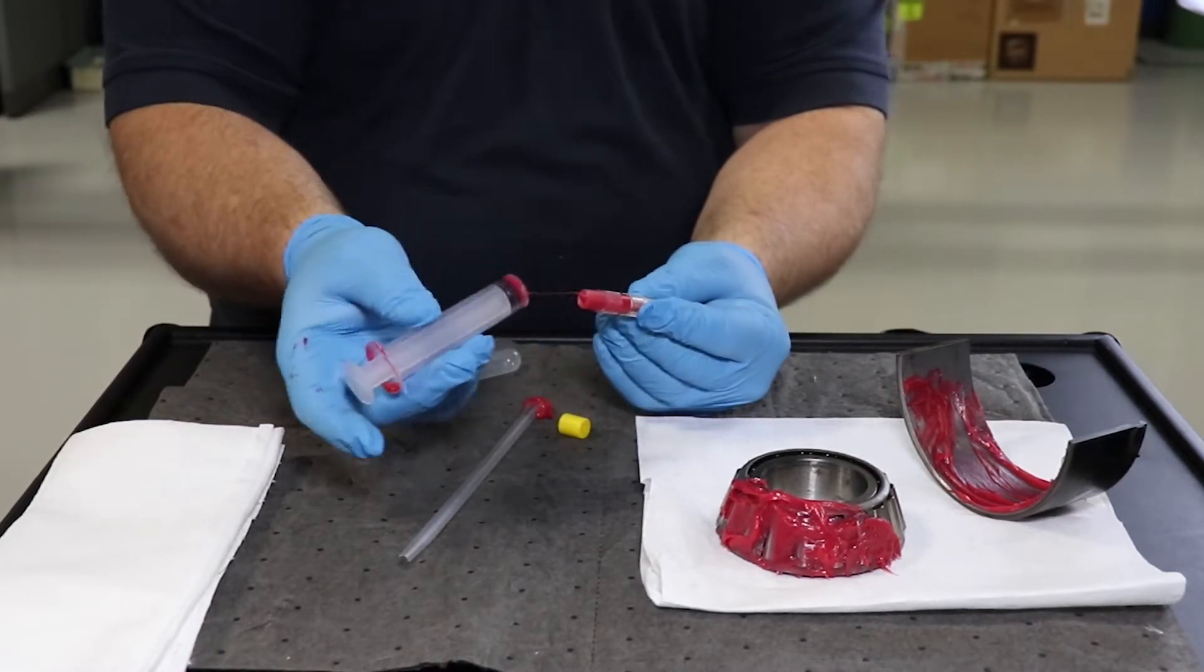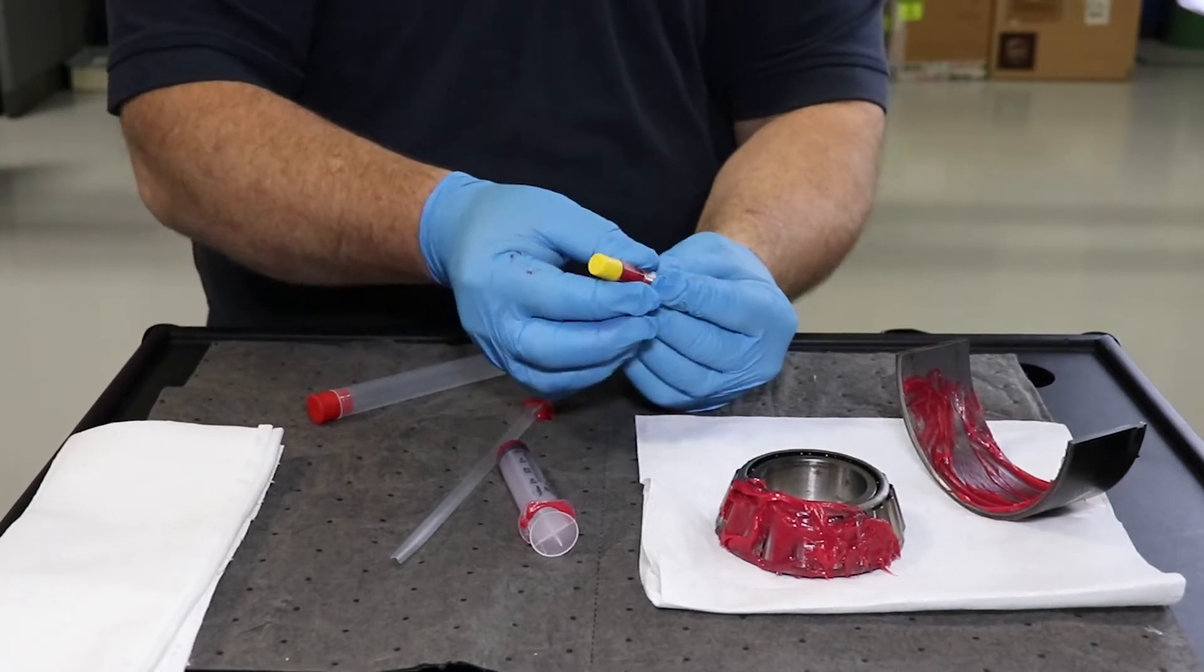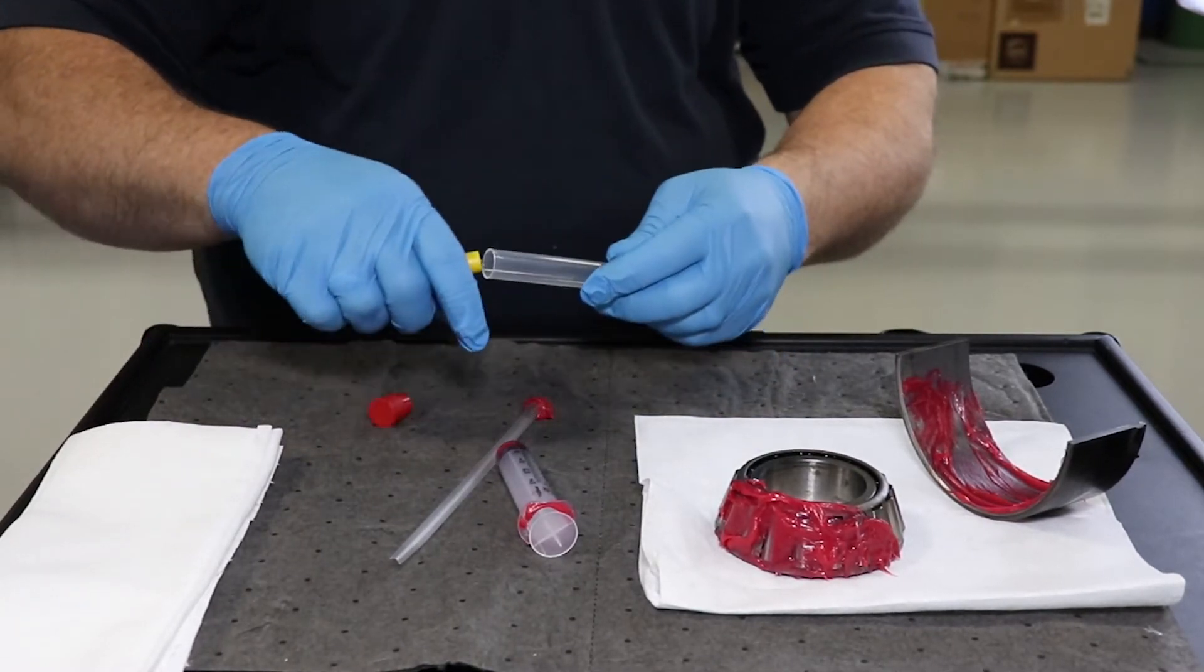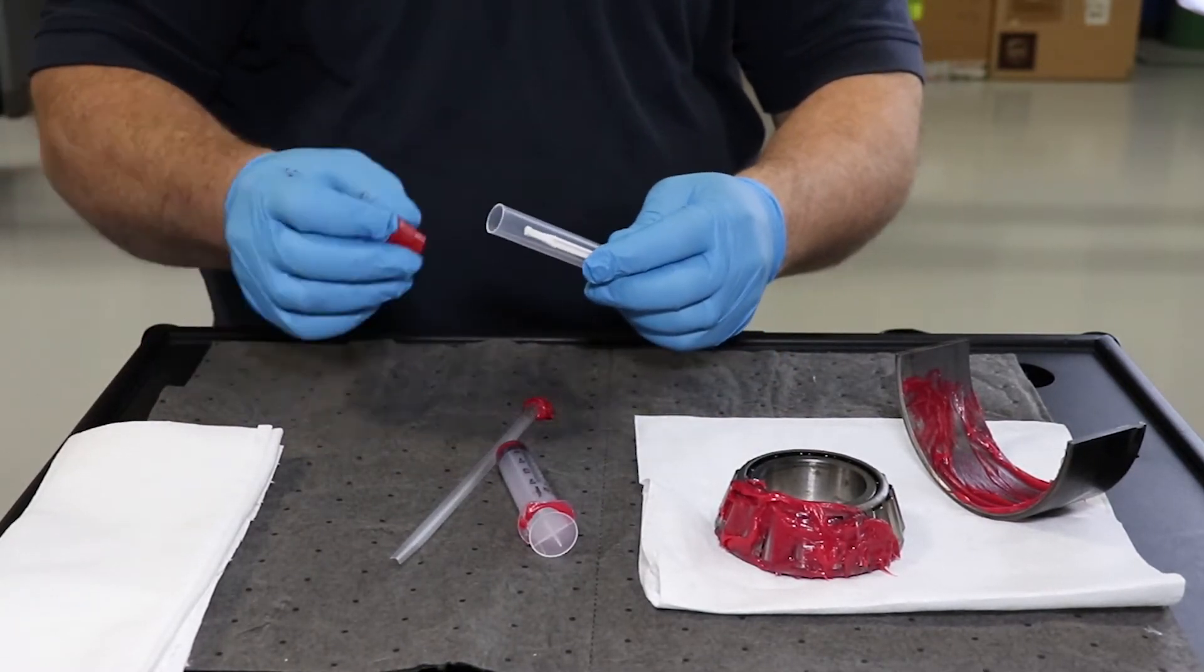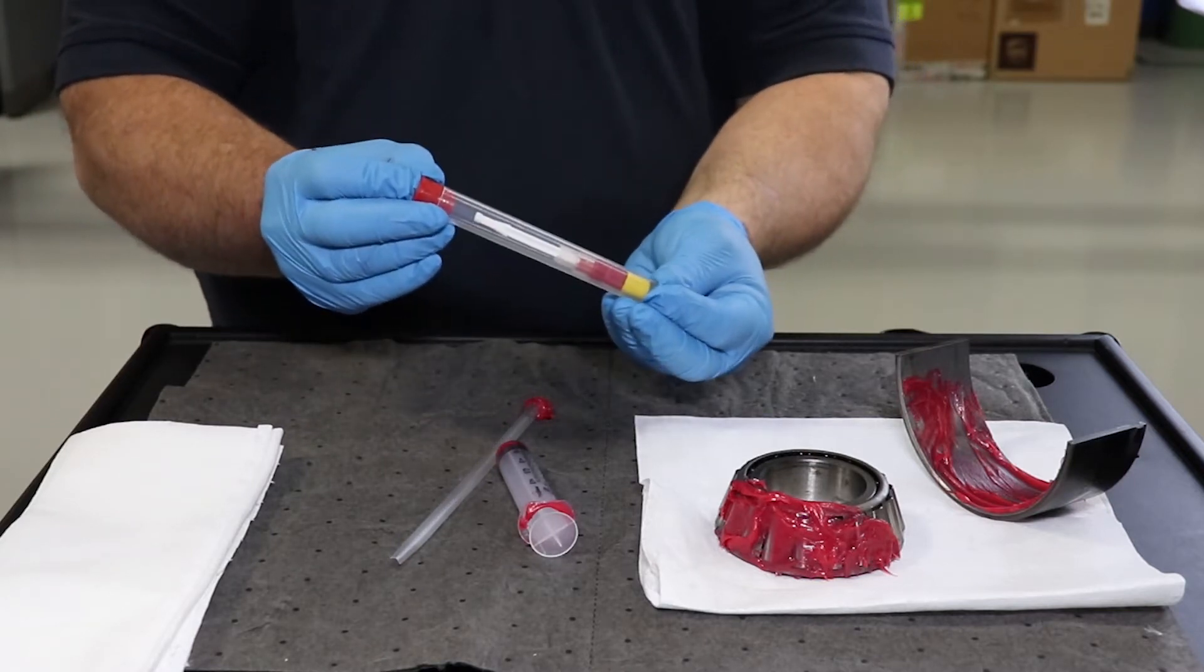Place the cap on the grease sampler. Place the grease sampler into the shipping tube. Your sample is now ready to send to the laboratory.